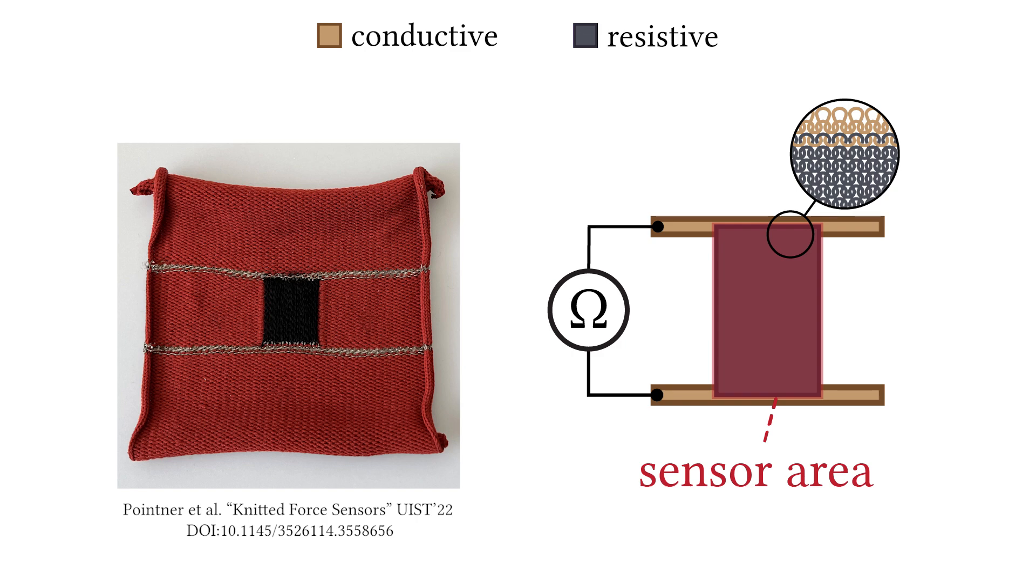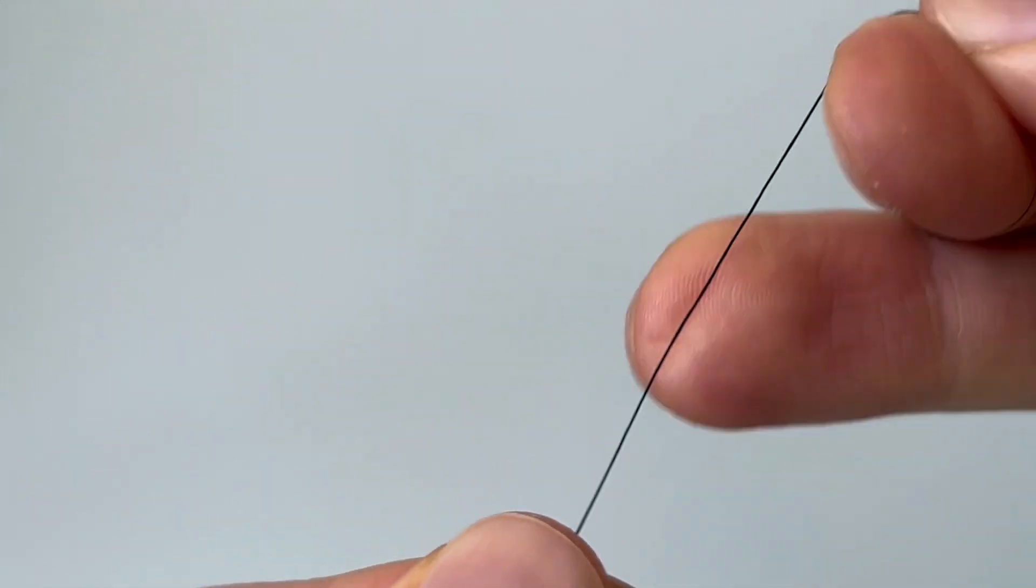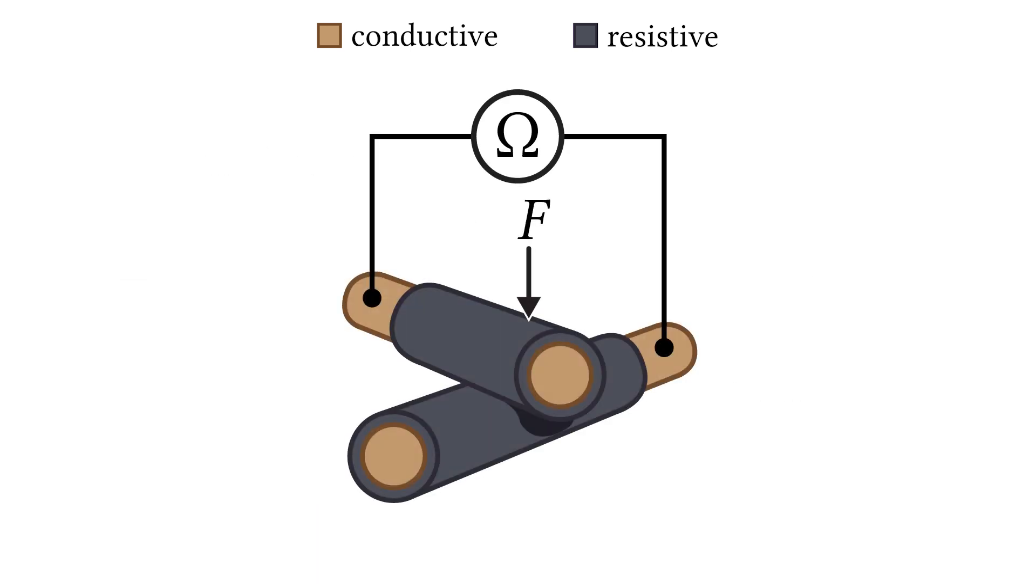We use a flexible and durable LITS wire with a copper core and piezo-resistive coating to combine all required materials into one single component. A force-sensitive resistor can therefore be established by a single intersection of those wires.